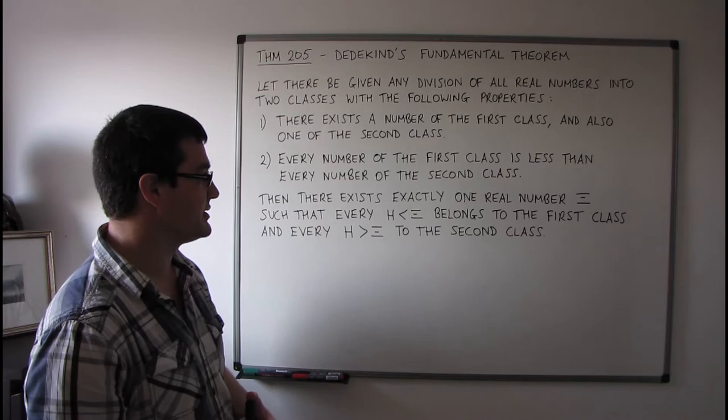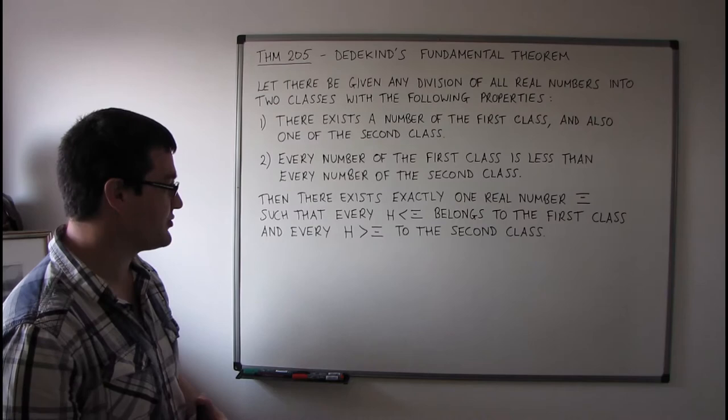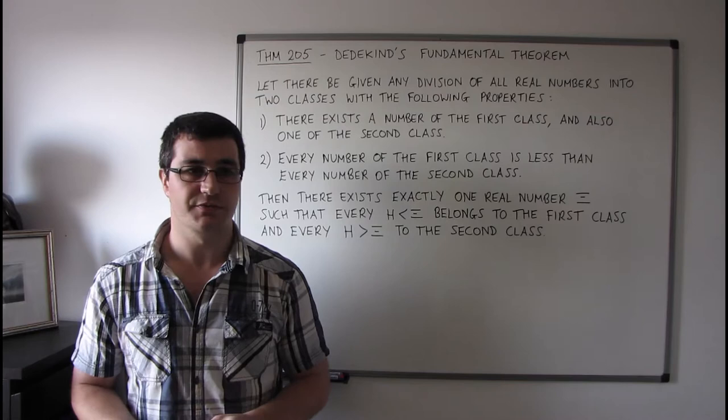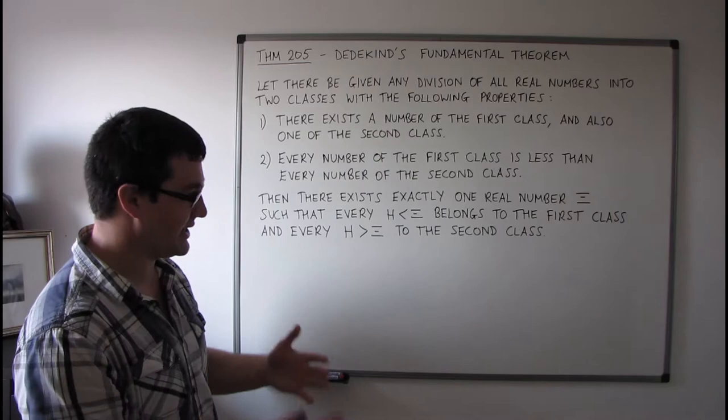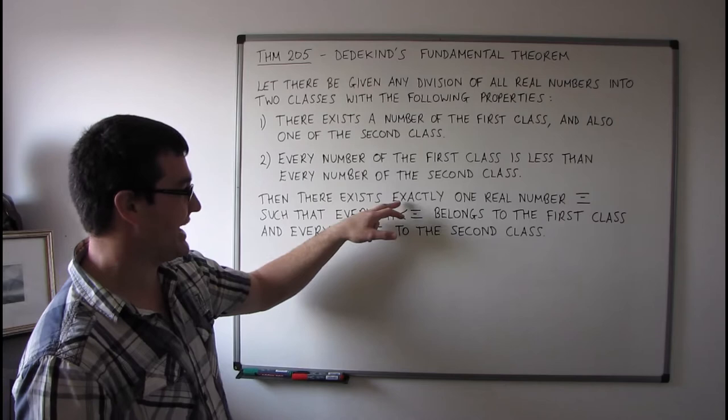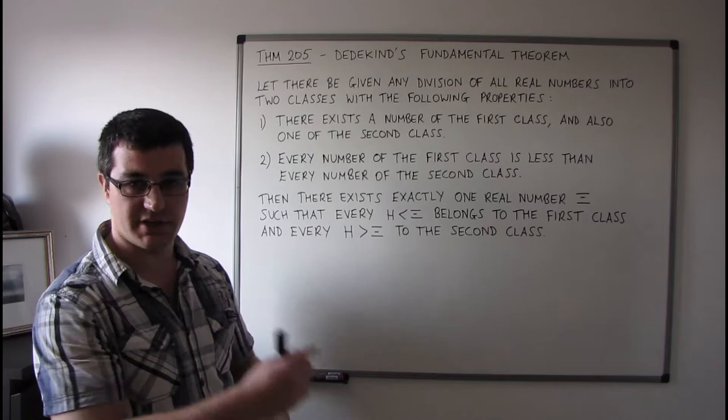Then there exists exactly one real number psi such that every eta less than psi belongs to the first class and every eta greater than psi belongs to the second class. The proof is not very difficult; there are two main parts to it — the existence part and the uniqueness part — and we're going to do these parts separately, starting with uniqueness.